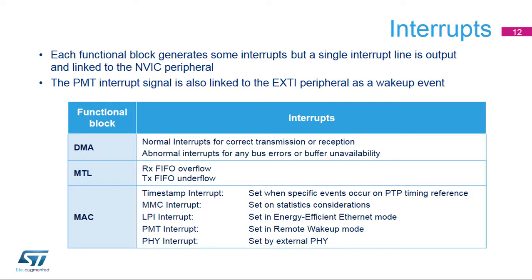An interrupt from the Ethernet peripheral can be generated as a result of various events. All interrupt lines can be masked and converge to the same global interrupt signal linked to the NVIC peripheral. An interrupt raised in remote wake-up mode is redirected to the EXTI as a special event, enabling a full-system wake-up. Interrupts are reported from the three main functional blocks of the peripheral: the DMA, the MTL — which manages the internal FIFOs for each receive and transmit path — and the MAC itself, responsible for all functional parts of the protocol.